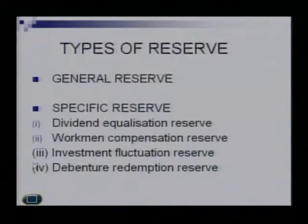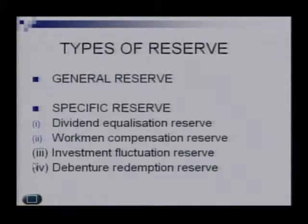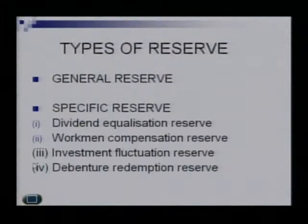There is also a difference in how they are presented in the balance sheet. There are basically two types of reserves: general reserve and specific reserve. General reserve is also called free reserve because management is free to use it for any purpose — there is no specific purpose, hence it is called general or free reserve. Specific reserves are further categorized into four types: dividend equalization reserve, workman compensation reserve, investment fluctuation reserve, and debenture redemption reserve.